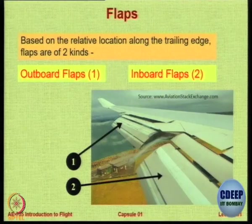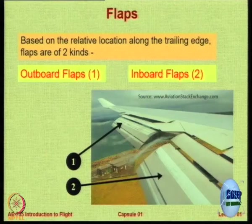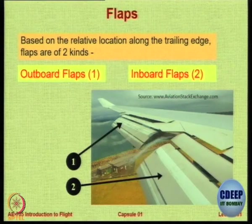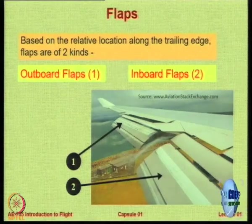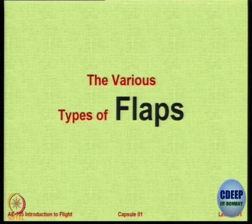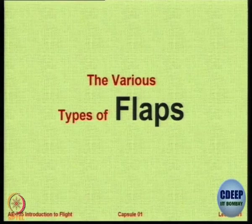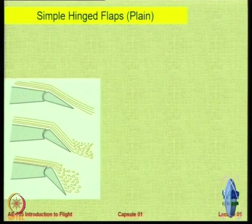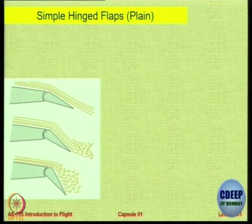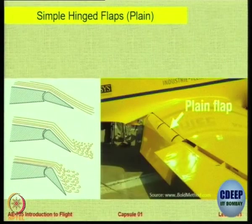Flaps are divided into outboard and inboard flaps. This division is done to alleviate load — you will normally deflect both together, but the load is distributed so that no single large structure carries all the load, which would require powerful actuators and make the aircraft heavy. A simple hinged flap — like a hinge at the wrist — is a plain flap; the whole section moves down across the hinge. It is the most simple flap.